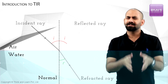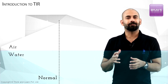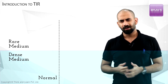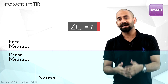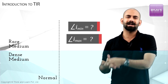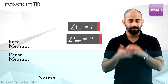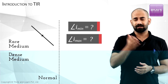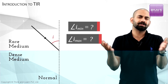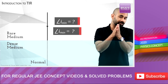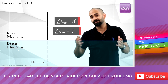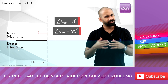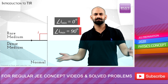Now let's consider a case where light is moving from a rare medium to a dense medium. What would be the minimum and maximum angle of incidence possible? It's quite simple — the minimum angle of incidence is 0 degrees and the maximum angle of incidence is 90 degrees.